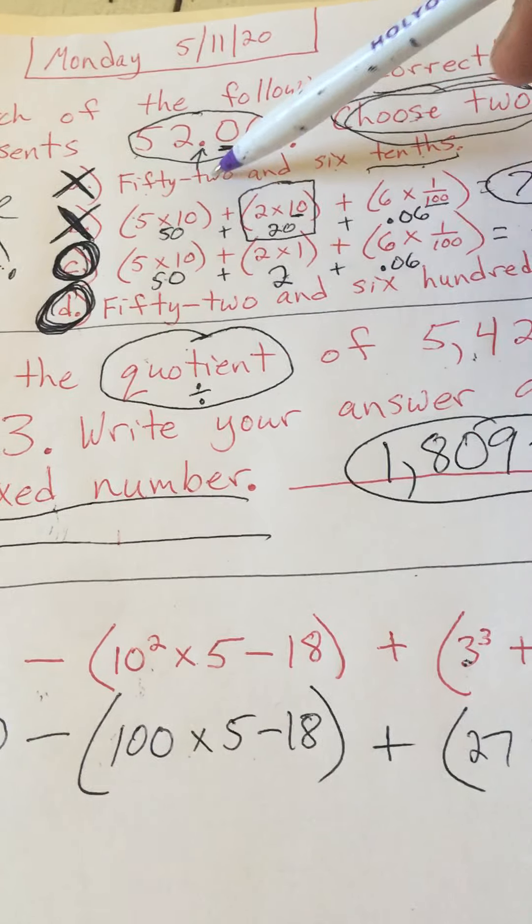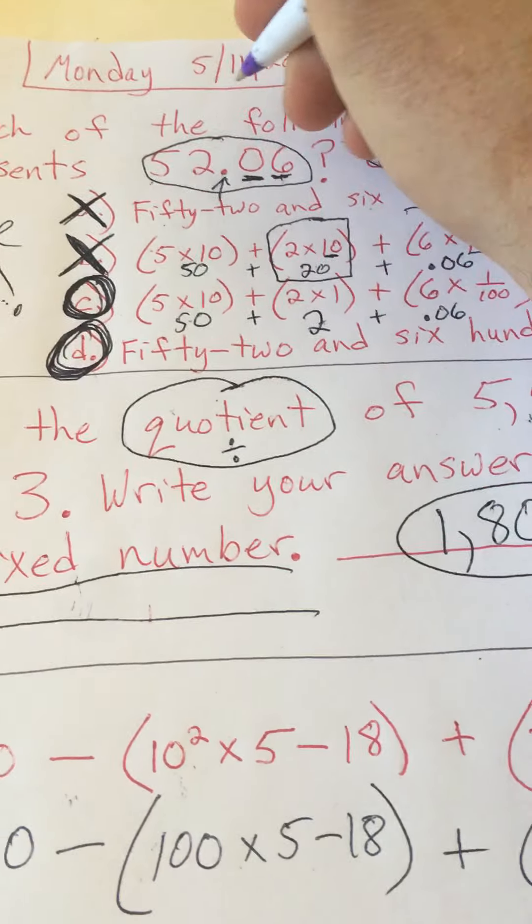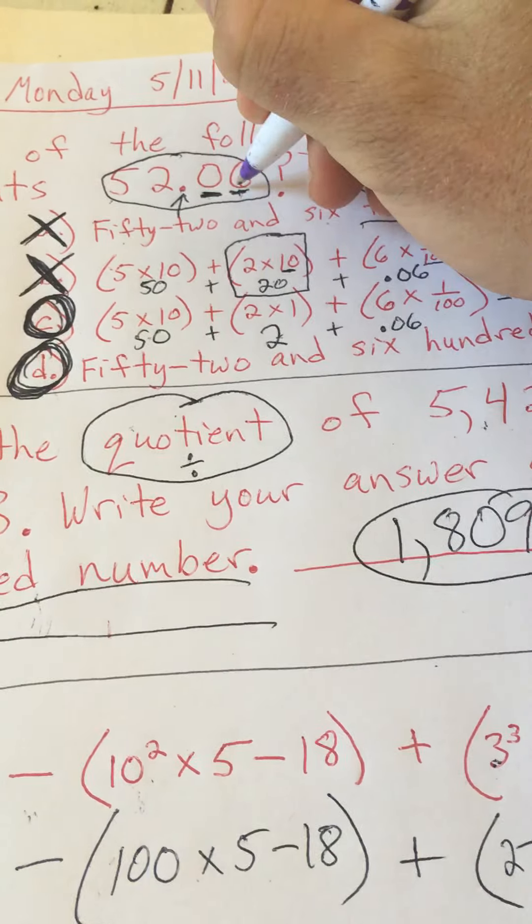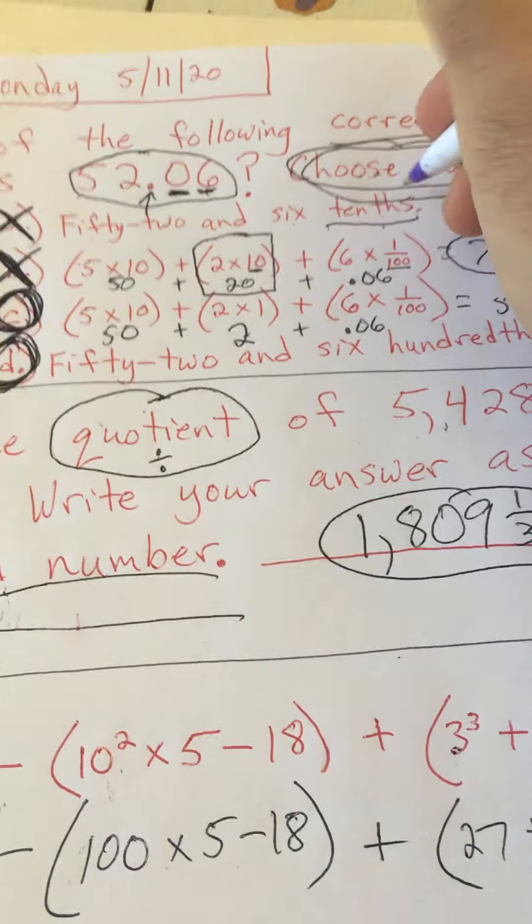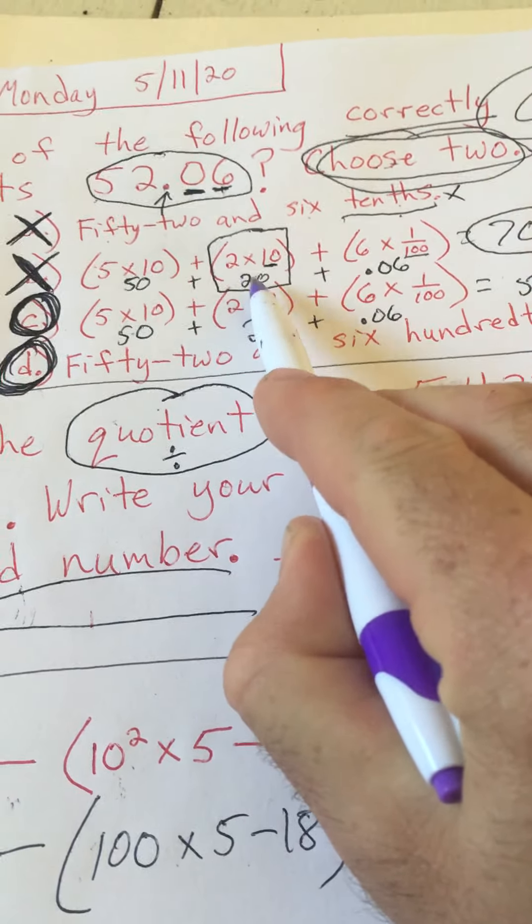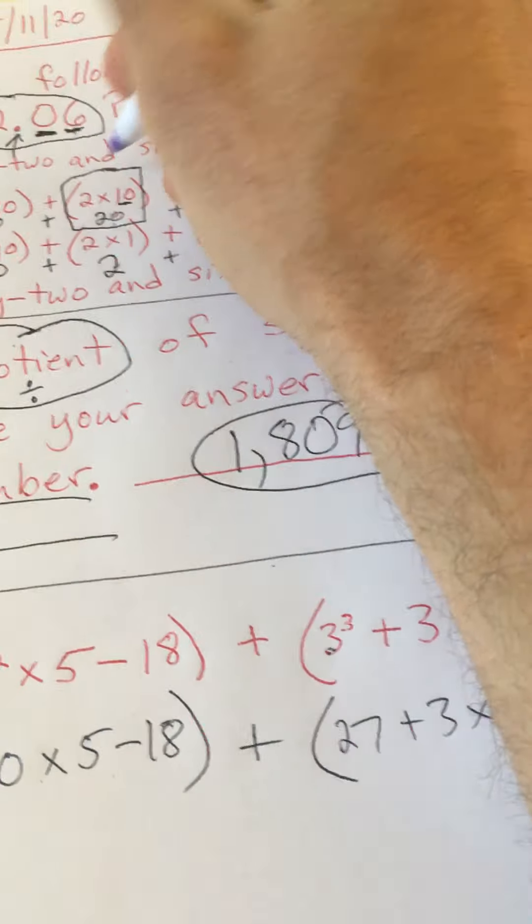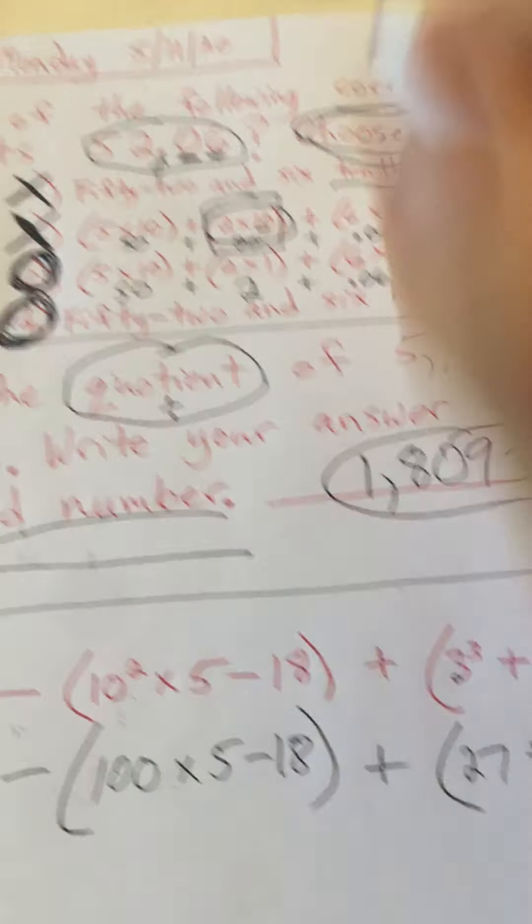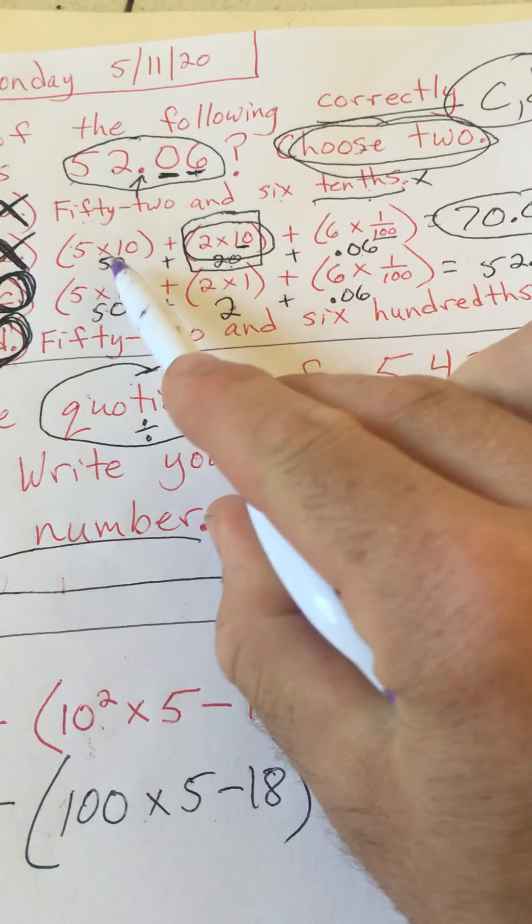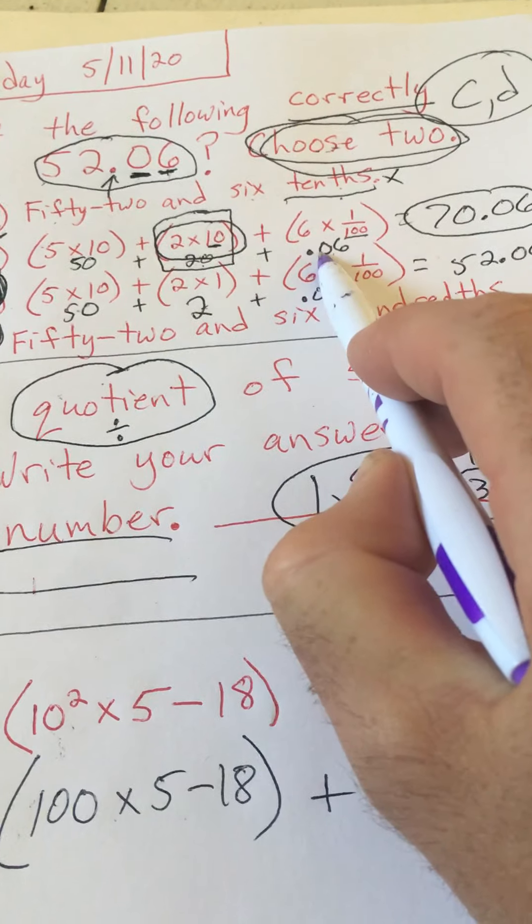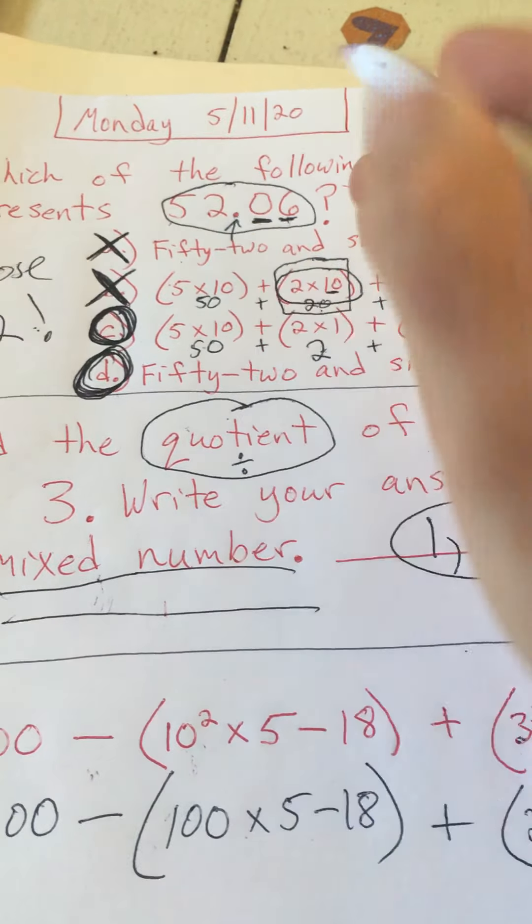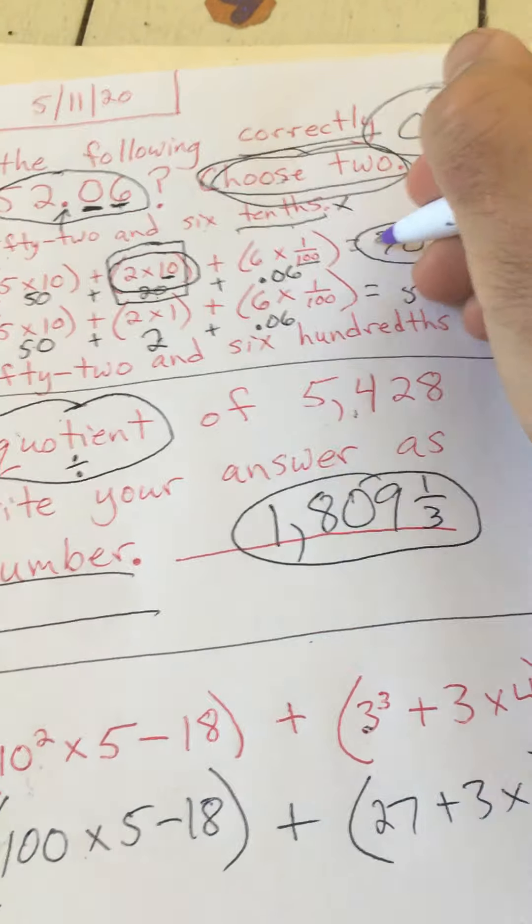It says which of the following correctly represents 52.06? So it's 52 and 6 hundredths, and we need to choose two. So A is incorrect, 52 and 6 tenths, because the zero is in the tenths place. So there are not 6 tenths, there are 0 tenths and 6 hundredths. B is 5 times 10 is 50, 2 times 10 is 20, not 2 times 1. 6 times 1 one-hundredth is 6 hundredths, which 50 plus 20 is 70, plus 0.06 is 70.06. So that is not equal to 52.06. B is also incorrect.